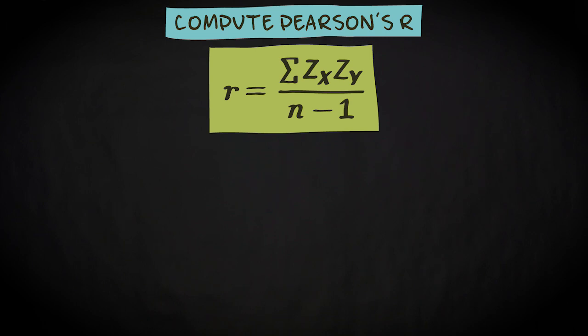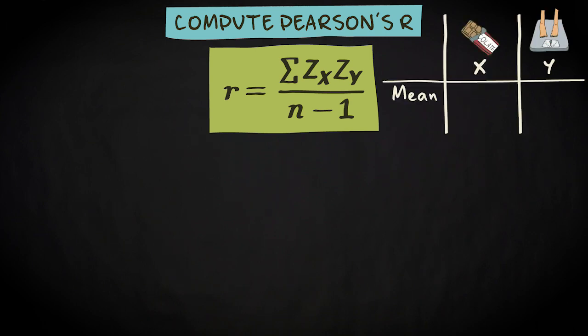So, first we compute the mean for both variables. This results in the value 162.5 for variable x, that's chocolate consumption, and 71.25 for variable y, that's body weight.